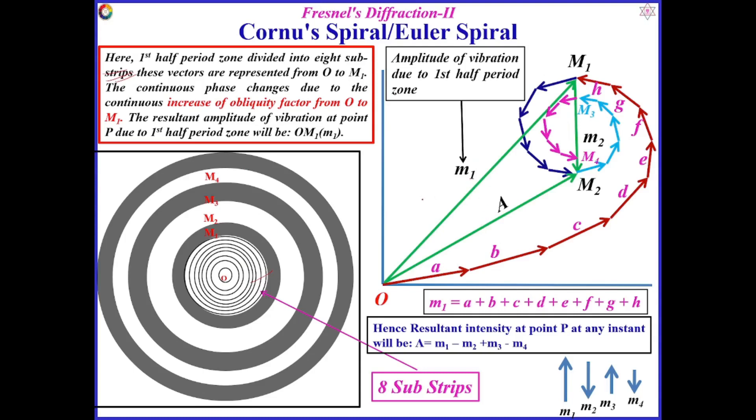Whenever we consider or draw these amplitudes for each and every zone, for the first half-quarter zone, this will be up to M1. For the second half-quarter zone, up to M2.